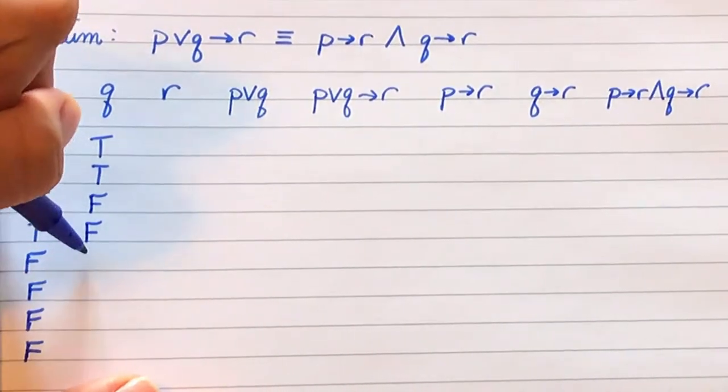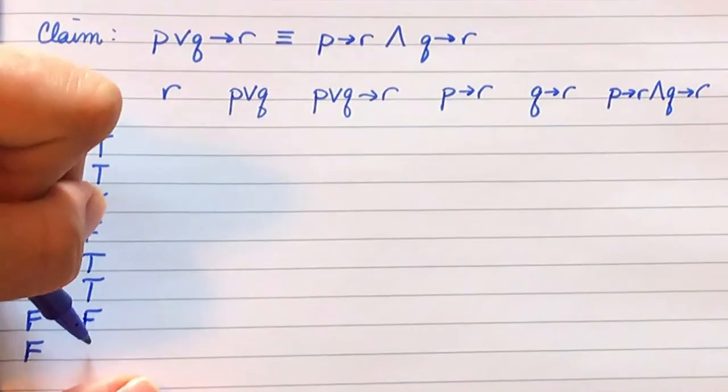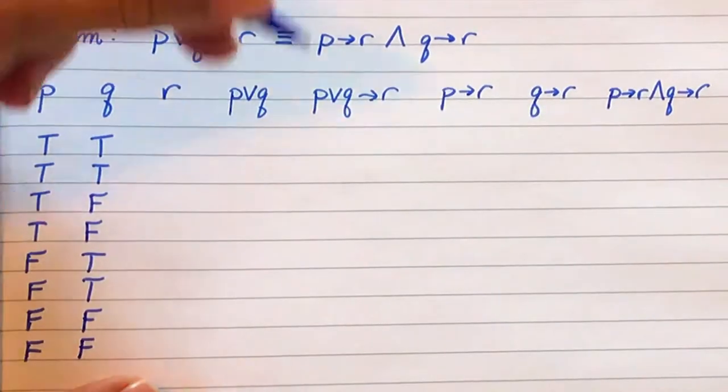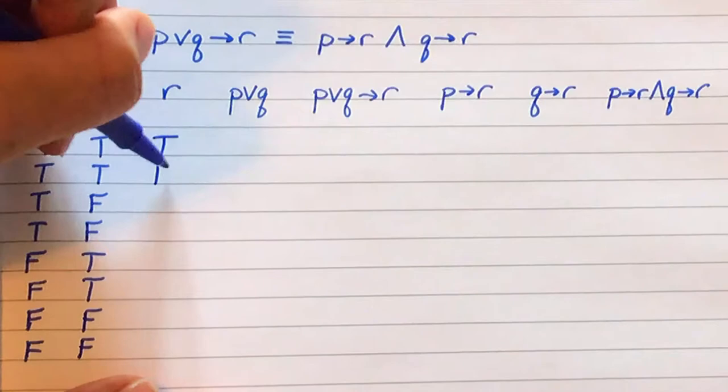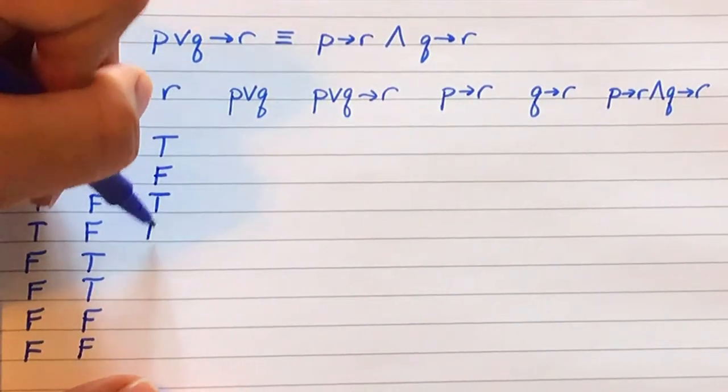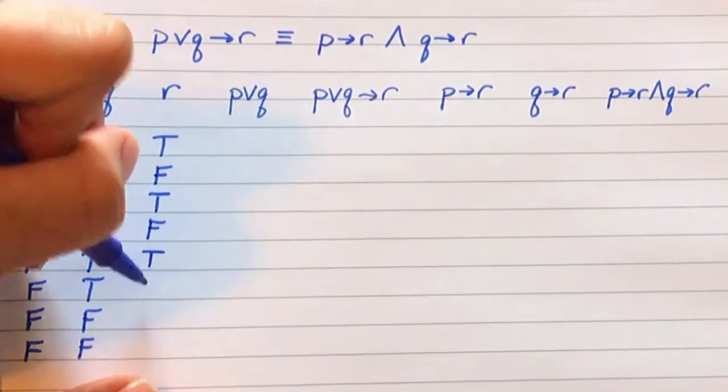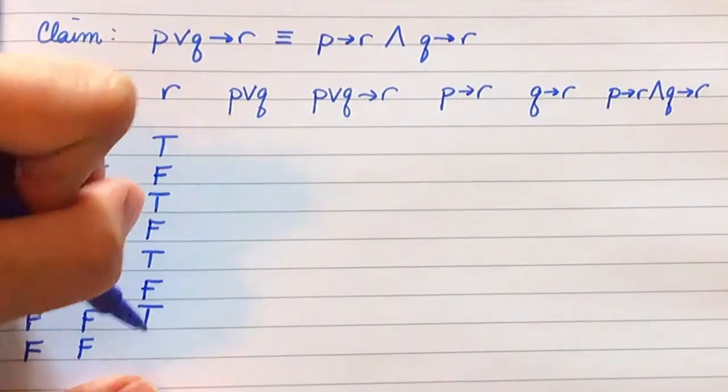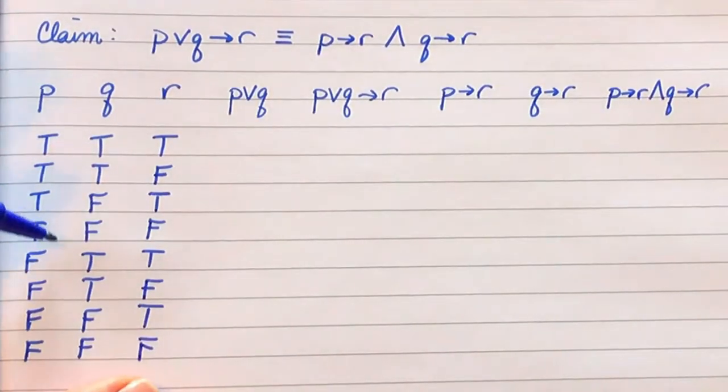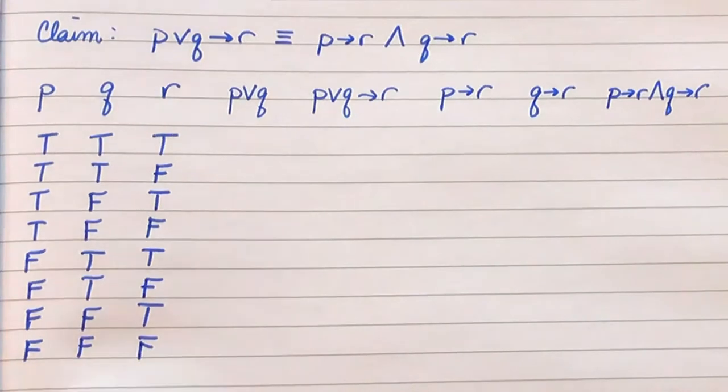And R is going to alternate. This way we get all of the combinations of truth values for the three variables.